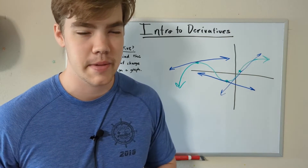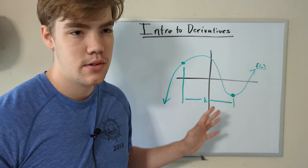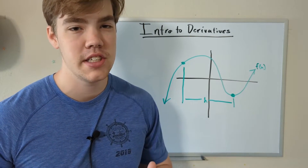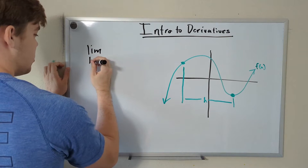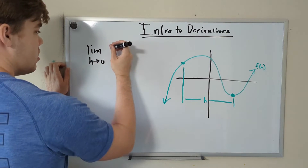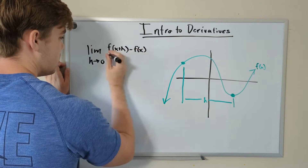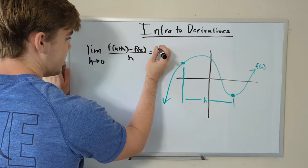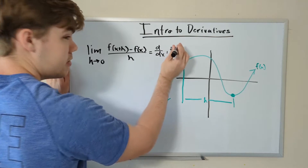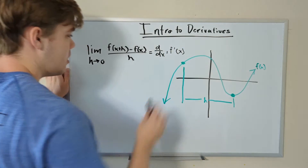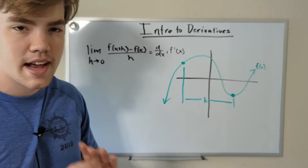Let's talk about solving derivatives and how they work, because I think it's really important to understand what's actually happening when you find a derivative. In order to understand this, we need to define the equation that can help us find any derivative. That equation is: the limit as h approaches 0 of f(x+h) minus f(x) divided by h, which equals our derivative — denoted as d/dx or f-prime of x.